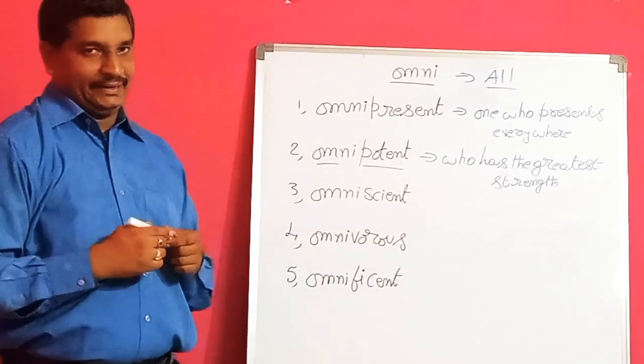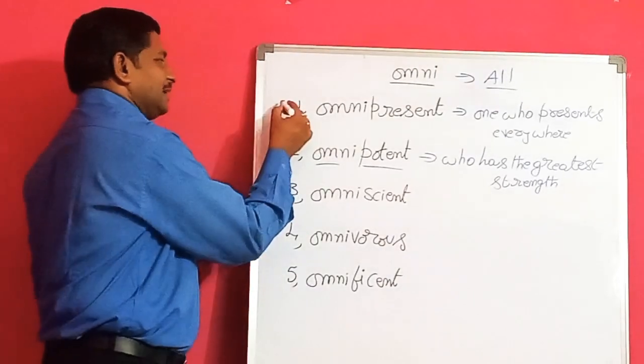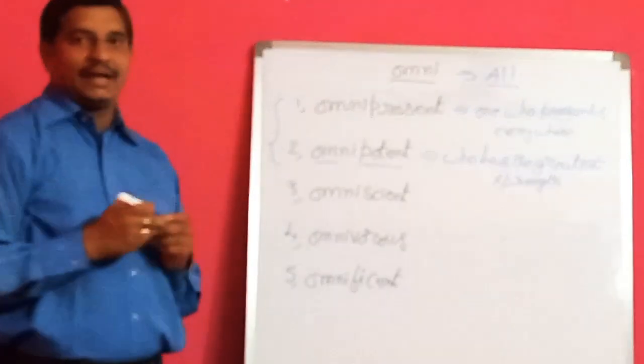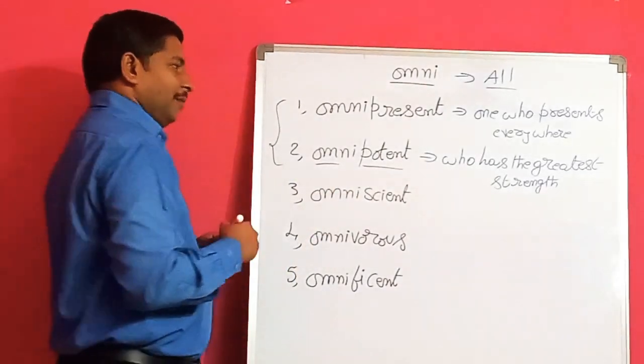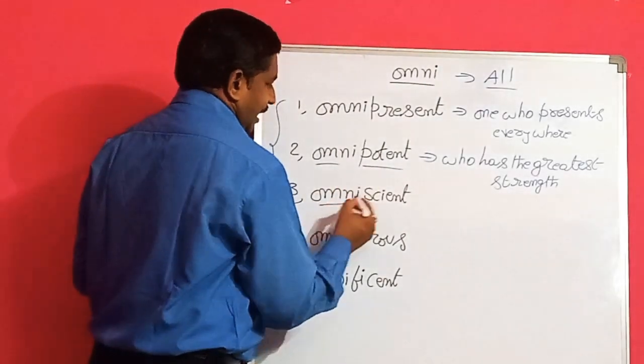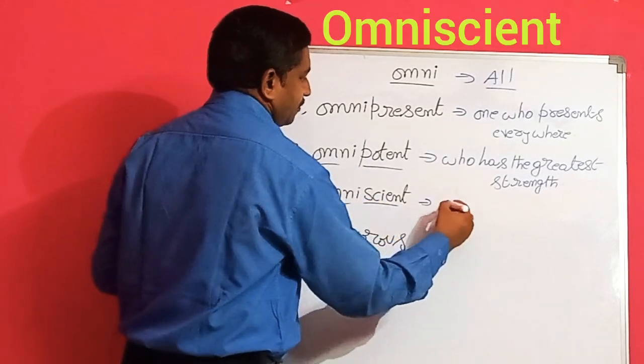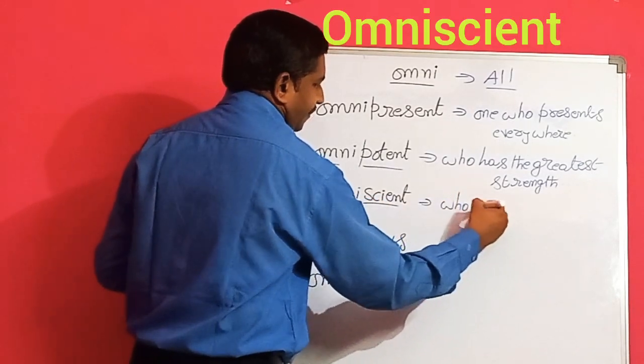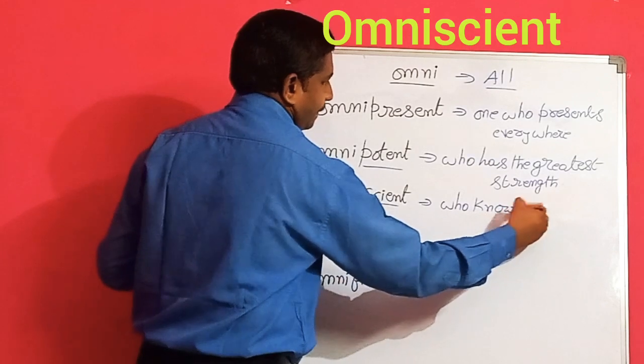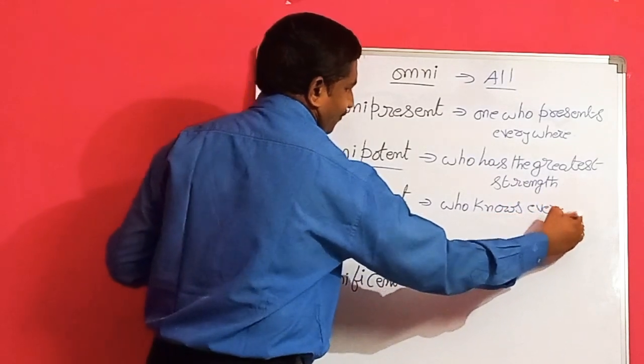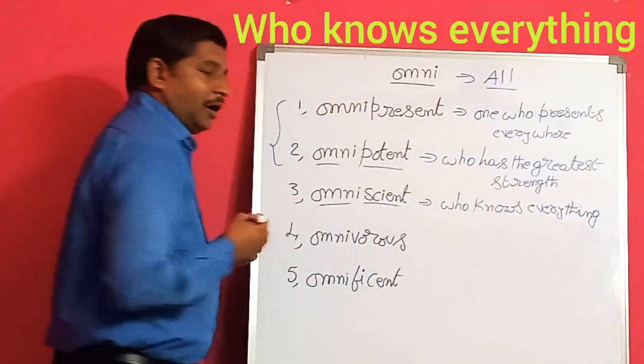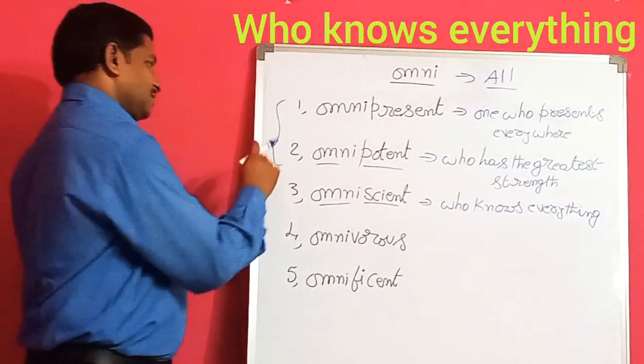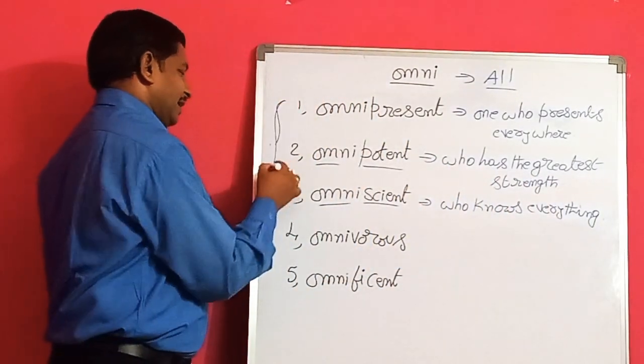Next, omniscient. Generally friends, these two words are synonyms for God. Omniscient: Omni means all, scient means known. That means who knows everything.